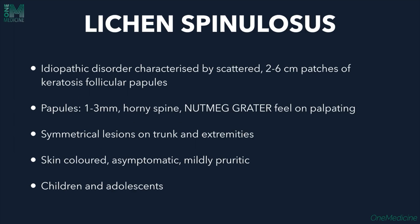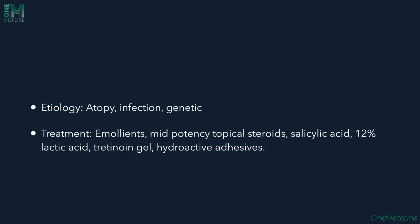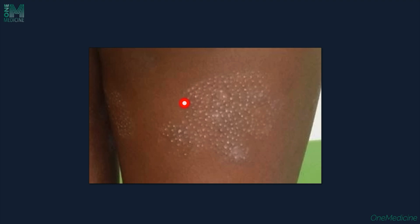Lichen spinulosis is an idiopathic disorder characterized by scattered 2–6 cm patches of keratotic follicular papules. Papules are 1–3 mm in size with horny spines and a nutmeg-grater feel on palpation. Symmetrical lesions are seen on the trunk and extremities. They are skin-colored, asymptomatic or mildly pruritic, mostly affecting children and adolescents. Etiology involves atopy, infection, and genetics. Treatment includes emollients, mid-potency steroids, salicylic acid, 12% lactic acid, tretinoin gel, and hydroactive adhesives.